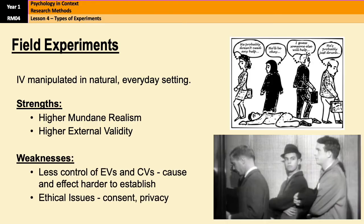However, weaknesses that come hand in hand with that is a lack of control over extraneous variables and confounding variables, which means that it becomes just a tiny little bit harder to establish cause and effect. There's also ethical issues that come hand in hand with field experiments because very often the participants don't know that they are participating in an experiment, which then creates issues over consent.